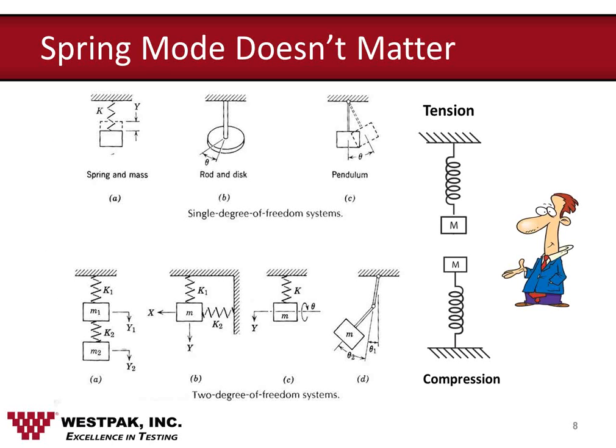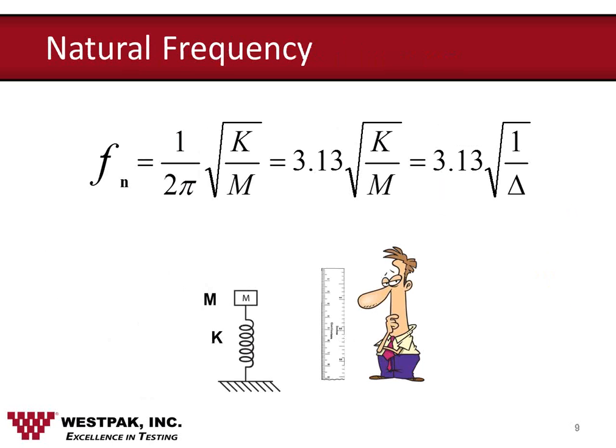The mode of the spring is not important. The spring mode could be tension, compression, torsion, shear, flexure, or any other mode by which a spring changes its dimensions. This also applies to two degree of freedom systems as shown in the lower figures on this particular slide. Also shown is the fact that a tensile model spring mass system is nothing more than an inverted compression model — they function identically the same way.